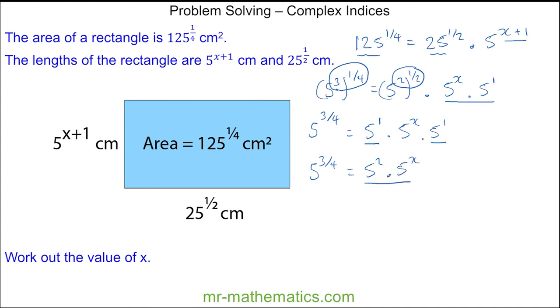I'm going to divide both sides by 5 squared, and these will cancel. So 5 to the power of 3 over 4, divided by 5 to the power of 2, which I'm going to write as a fraction over 4, which is 8 over 4, is equal to 5 to the x.